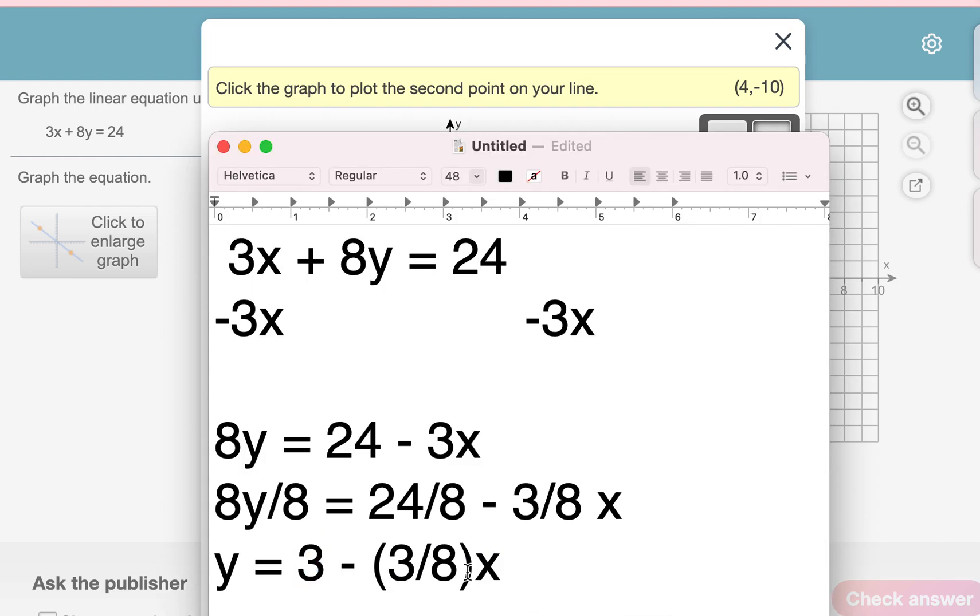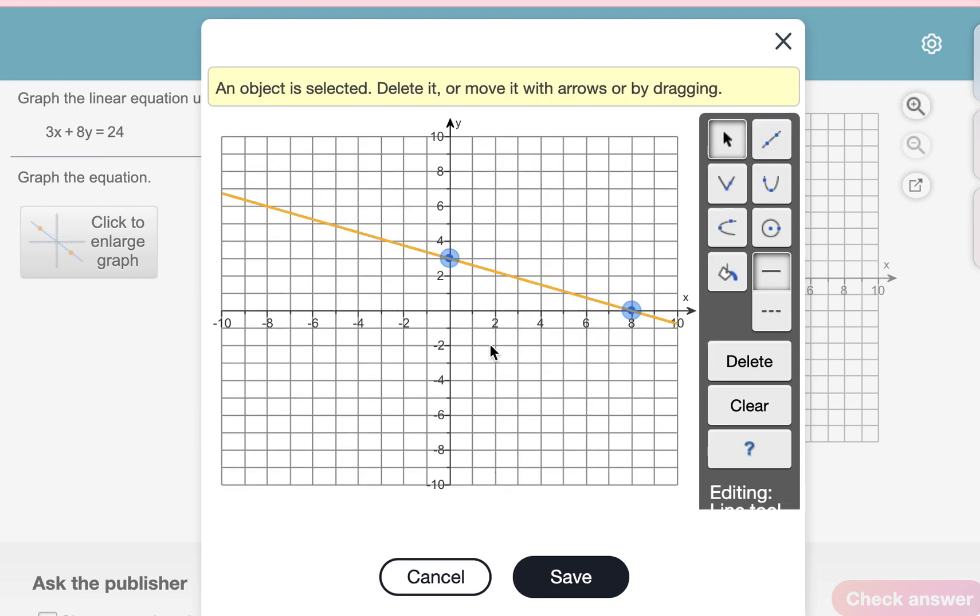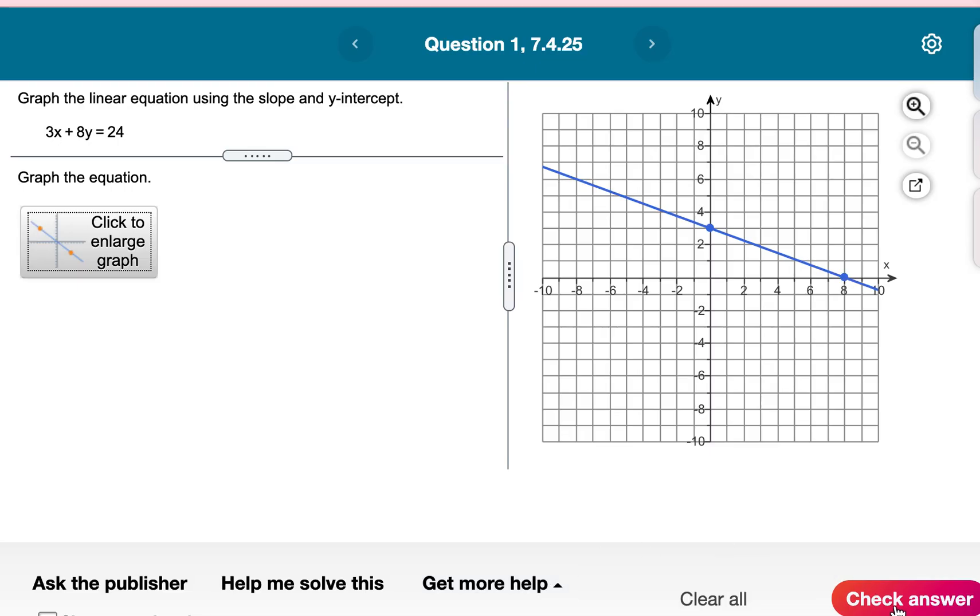And then we have a slope of negative 3 eighths. It's negative because the sign to the left is a negative. And the negative means you count down 3 and to the right 8. So we go down 3. So here's my starting dot. We said it started at 3 on the y-intercept. So we count down 3 and to the right 1, 2, 3, 4, 5, 6, 7, 8. Down 3 and to the right 8. So you just count out the rest of the slope.